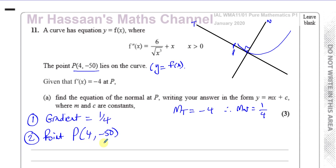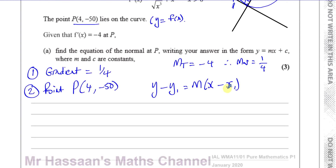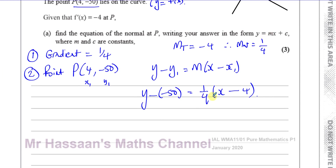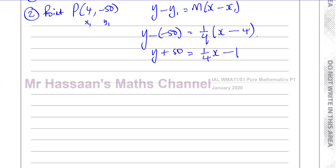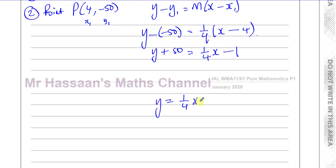I know the gradient is a quarter and I know a point on the line (4, −50), so I can work out the equation. Using y minus y₁ equals m times (x minus x₁): y minus (−50) equals (1/4)(x − 4). Expanding: y plus 50 equals (1/4)x minus 1. Therefore y equals (1/4)x minus 51. That is the equation of the normal to the curve at P.